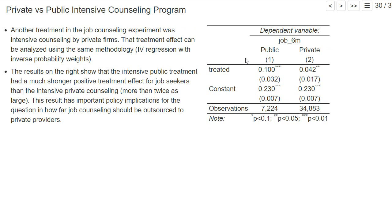Let's now finally analyze the treatment effect for the private job counseling program — conducted not by the public employment agency, but by private firms. We run an instrumental variable regression and a weighted instrumental variable regression using just the data from the private setting and the control group. What we find is a considerably smaller effect: private intensive job counseling increases the probability of finding a job compared to the control group by only 4.2 percentage points — less than half as much as public job counseling.